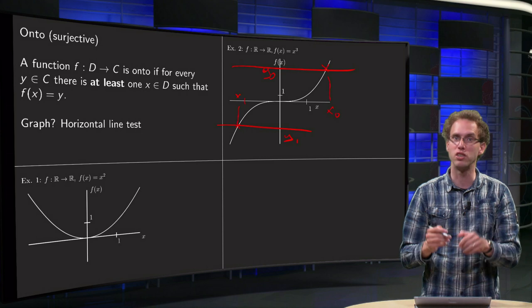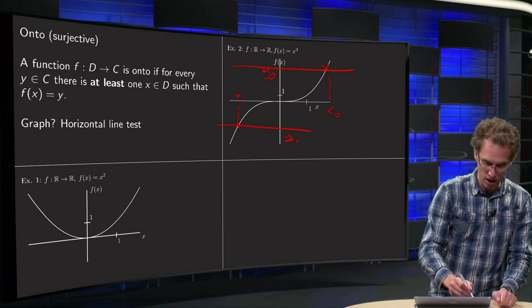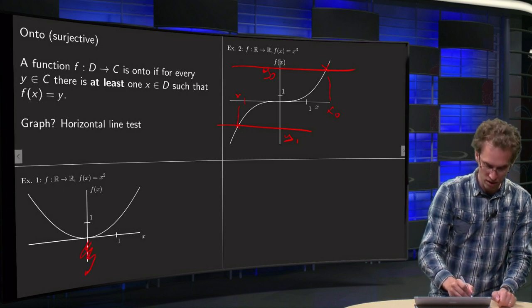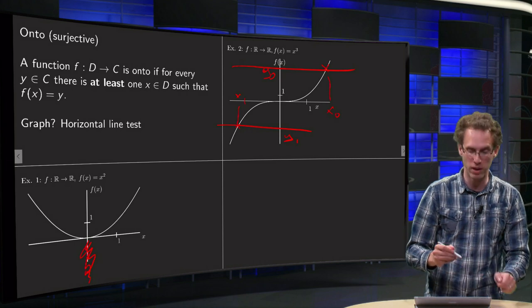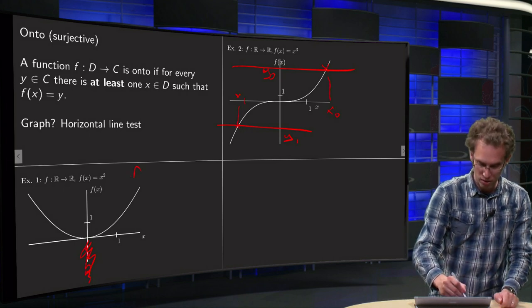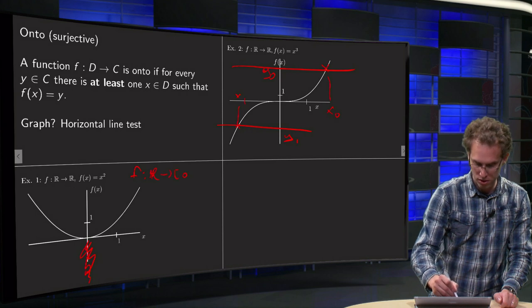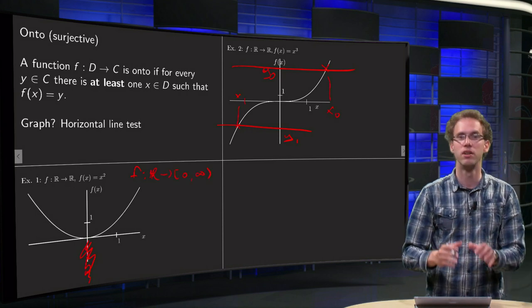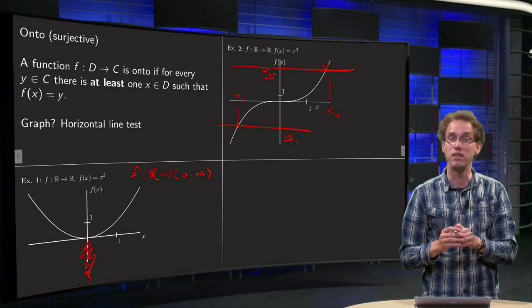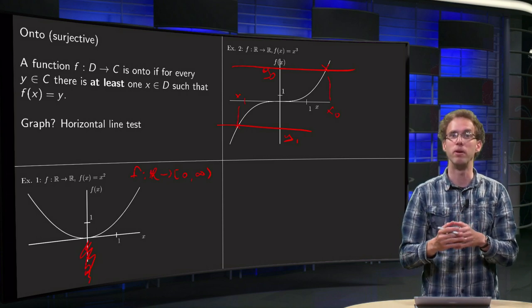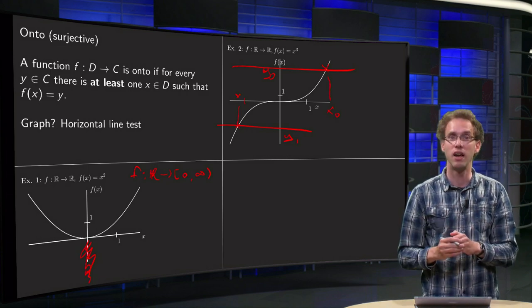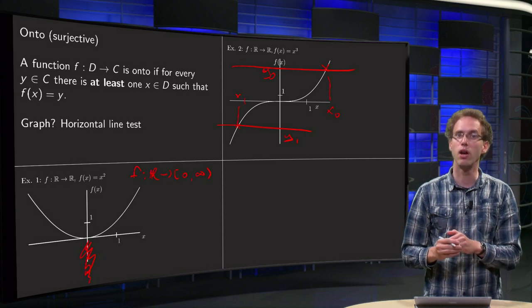In the f(x) equals x squared example, the upper part is fine, you can reach the positive values. But what you have to do is just cut out this lower part of your codomain, so you make your f from R to [0, infinity) instead. So you make your codomain different, and then with that codomain your function is again onto.